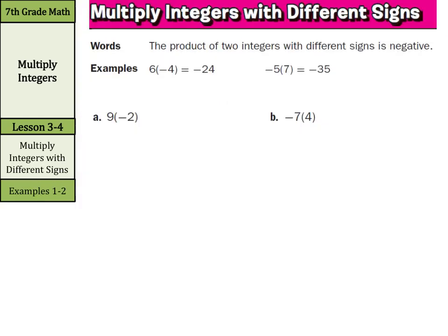Now, when we multiply integers with different signs, our rule here is the product of two integers with different signs is negative. So in our examples here, 6 times negative 4 is negative 24. We have 6 groups of negative 4, so that's negative 24.